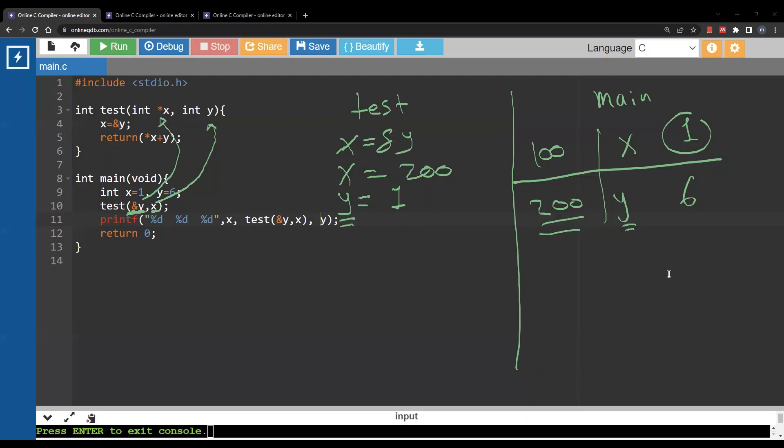Now inside the function test I'm going to execute the first line which is x equal the address of y. Now when we say y inside test, which y? The local y which is the y that belongs to the test function. Now this has a totally different address. Assume 500. The address of the variable y inside test is different from the address of the variable y inside main. So inside x I'm going to store 500.